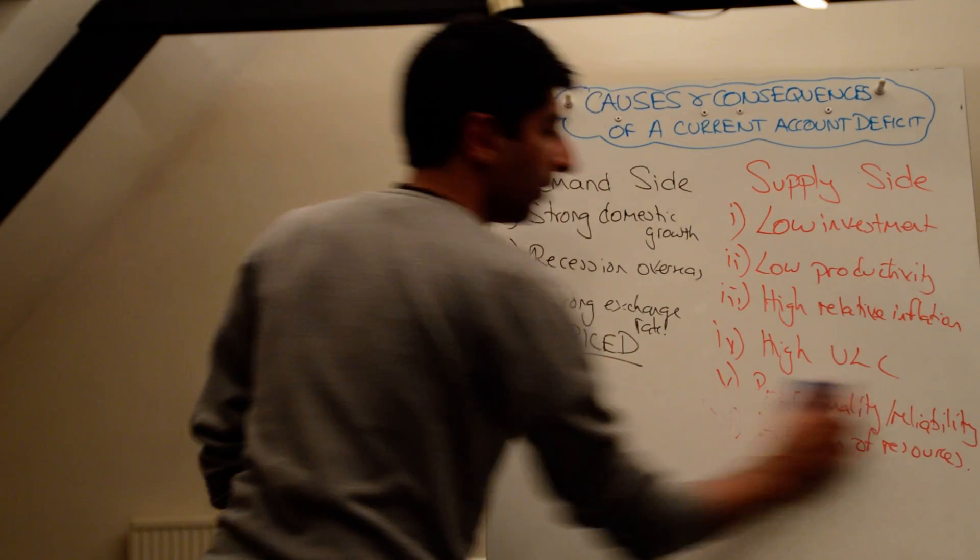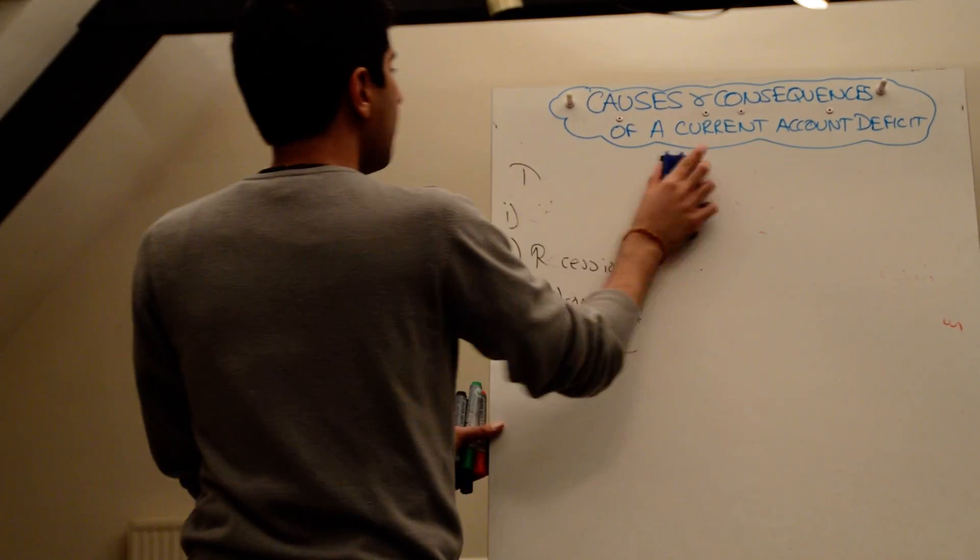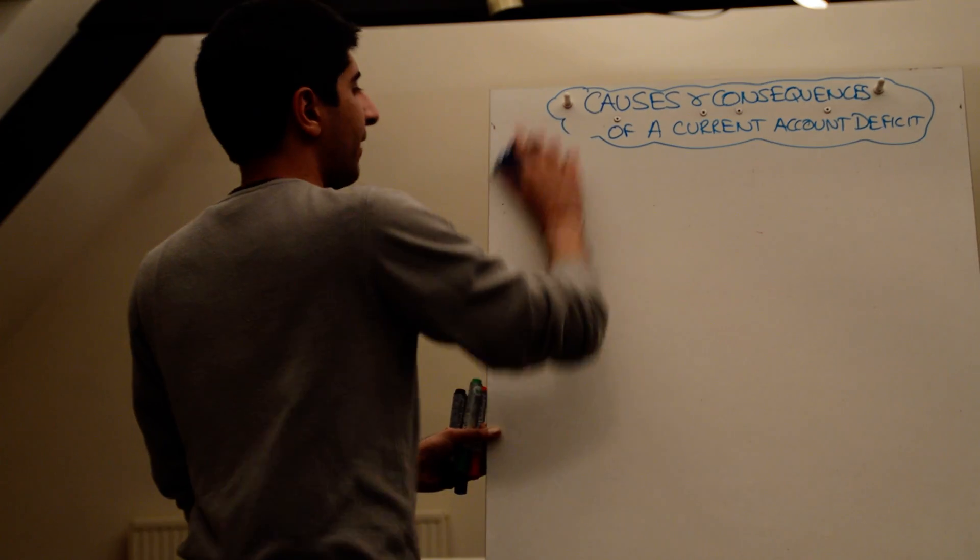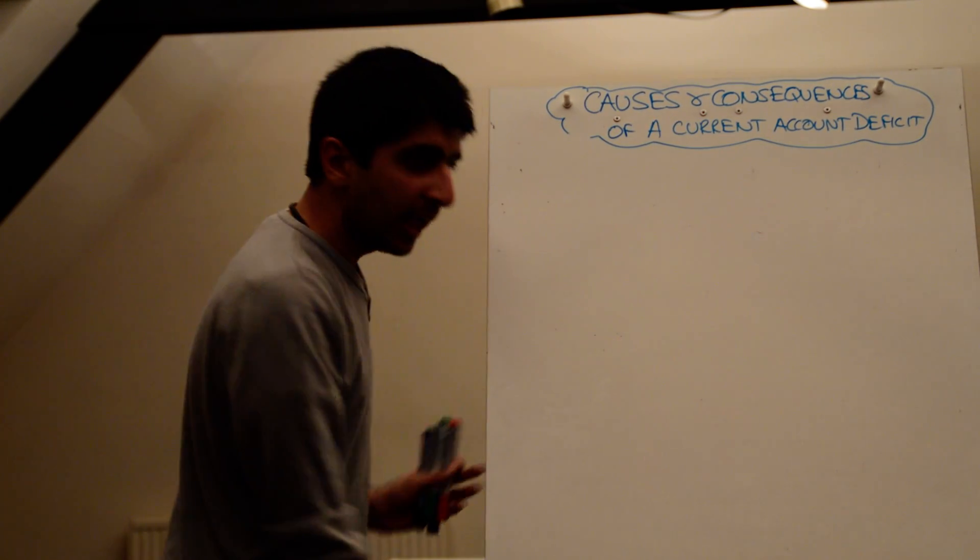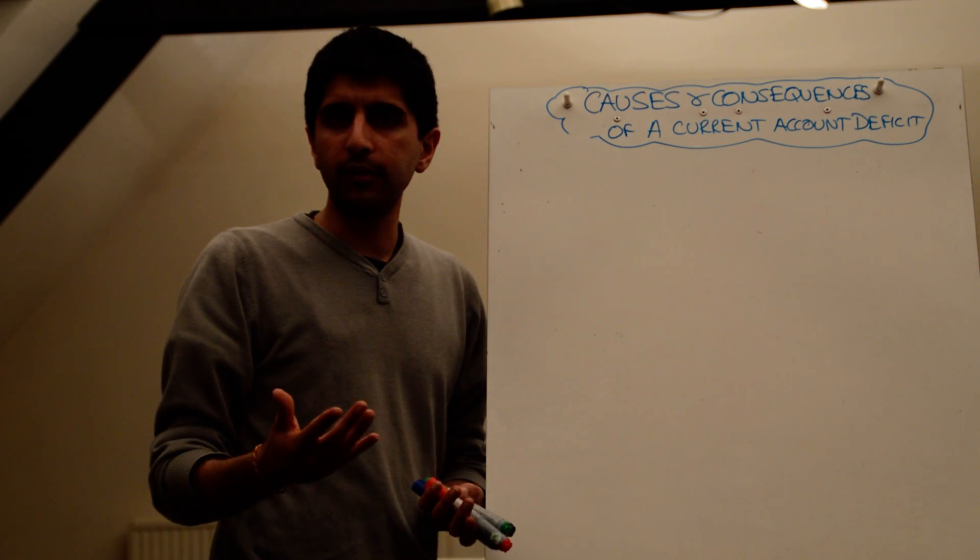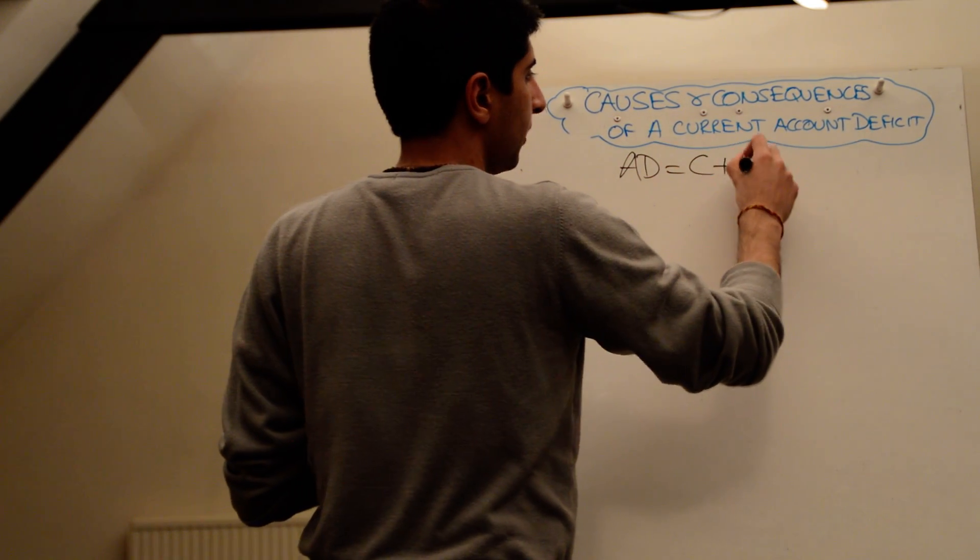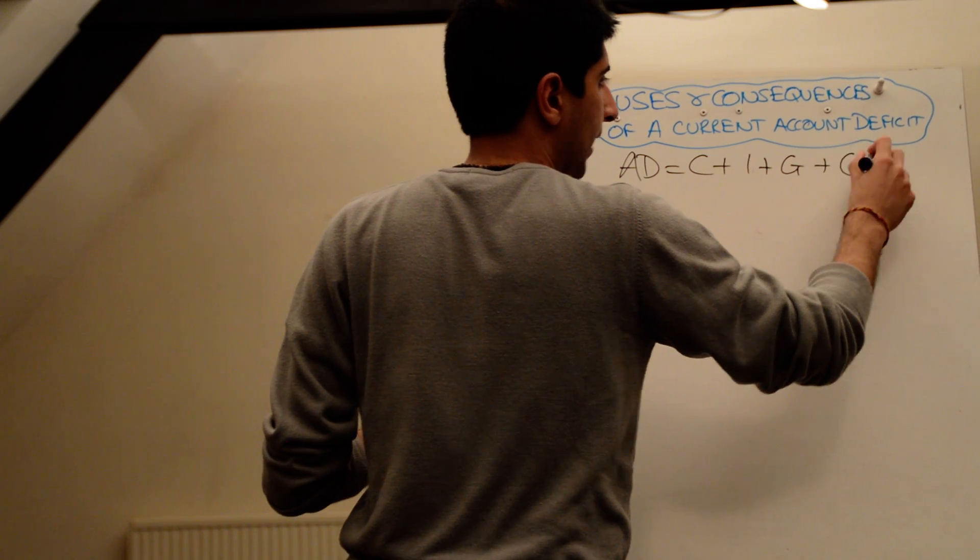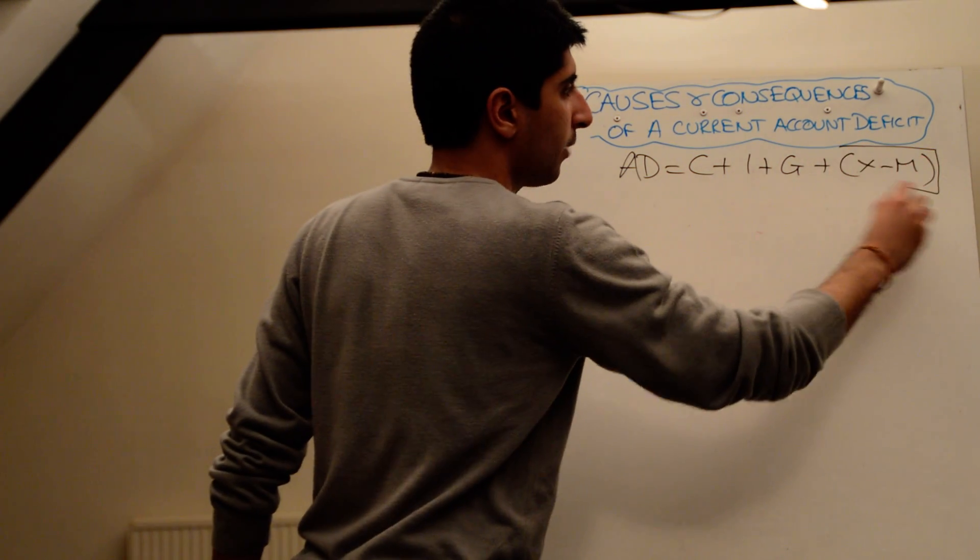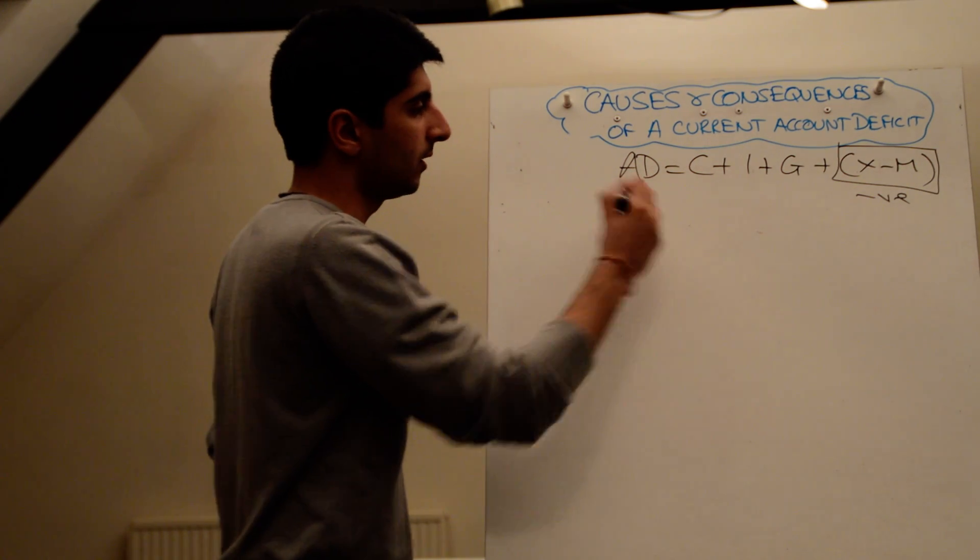And what are the consequences then? So, what are the problems with a current account deficit, if there are any? Well, the main problem is picture, in your head, aggregate demand, the equation, aggregate demand. If X minus M, in aggregate demand, the end of the aggregate demand equation, if that's falling, aggregate demand is going to fall. So, why is that bad for an economy? Well, there's the equation. So, AD is equal to C plus I plus G plus X minus M. What we're saying is if there is a current account deficit, then this bracket must be negative. And if that's negative, AD therefore must be falling.